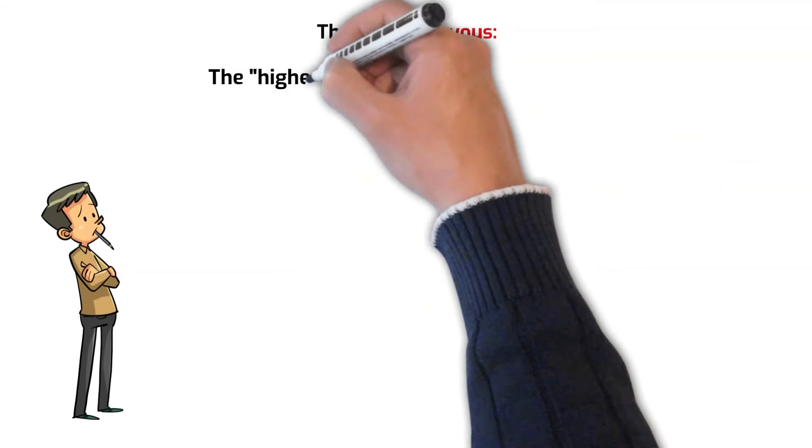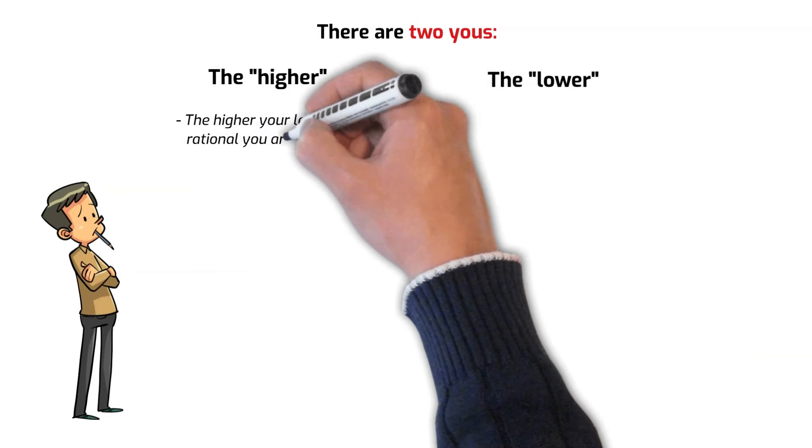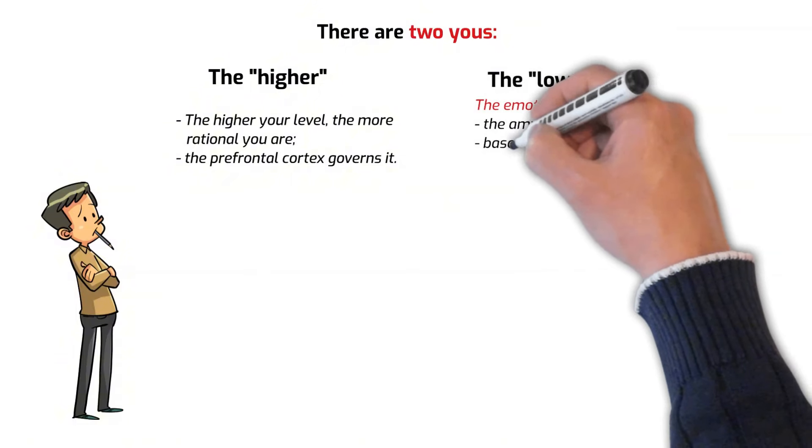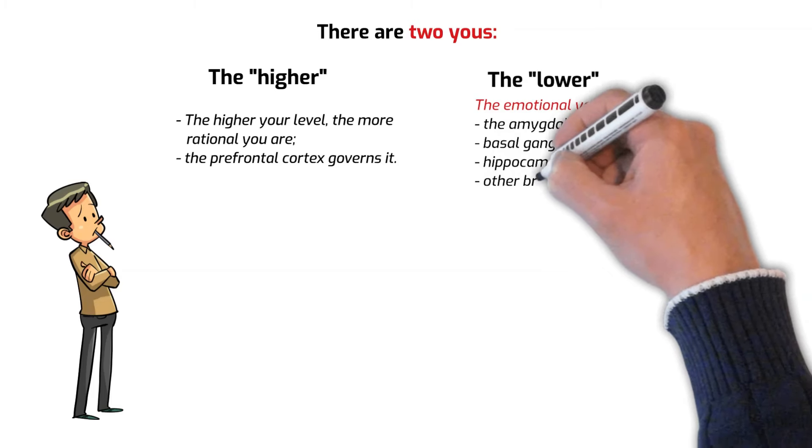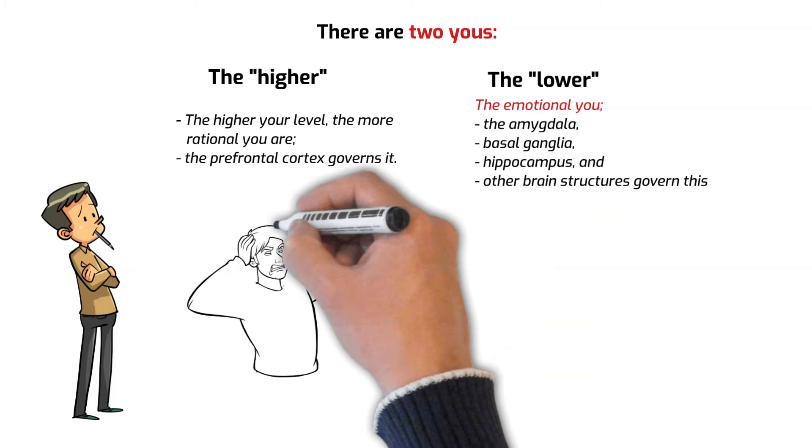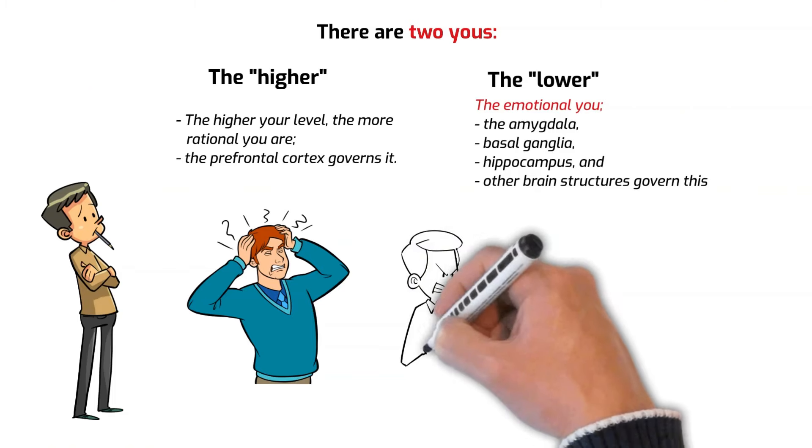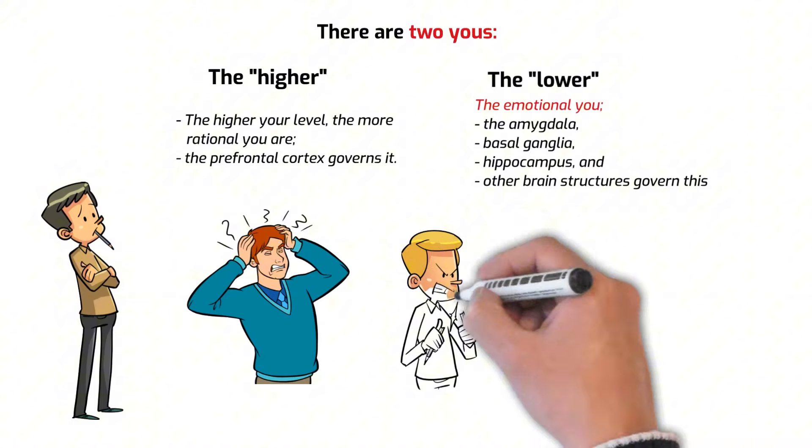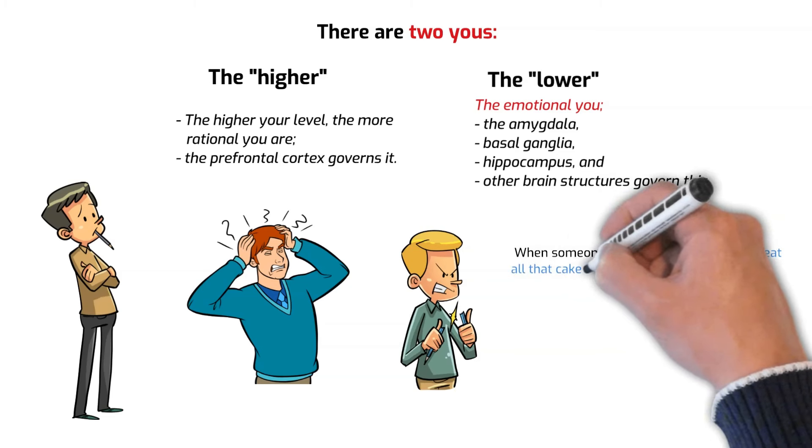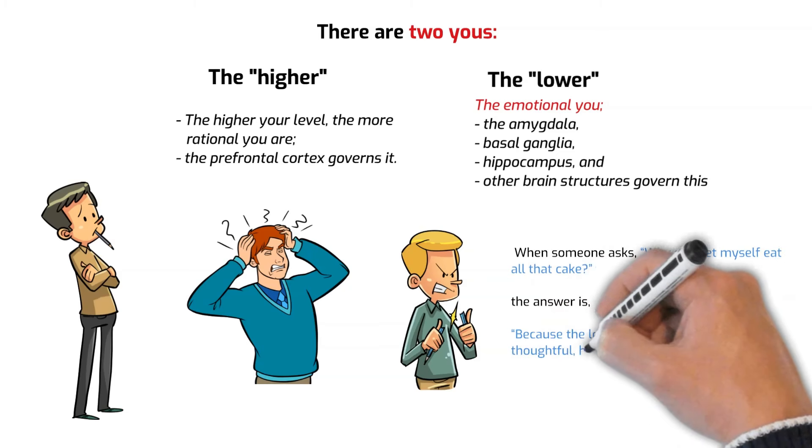According to Dalio, there are two U's, the higher and the lower. The higher your level, the more rational you are. The prefrontal cortex governs it. Then there's the lower level U, the emotional U, the amygdala, basal ganglia, hippocampus, and other brain structures govern this. These two parts of the mind can conflict, leading to internal tension and cognitive dissonance. For example, when someone gets angry with themselves, their higher level brain is fighting with their lower level brain. When someone asks, why did I let myself eat all that cake? The answer is, because the lower level you won out over the thoughtful, higher level you.